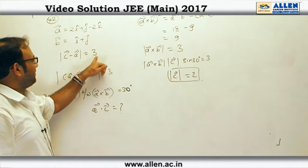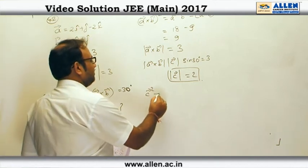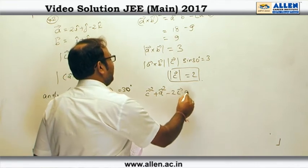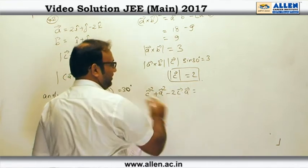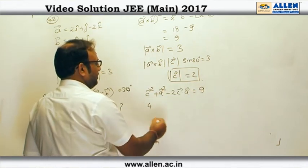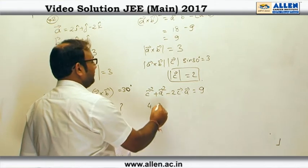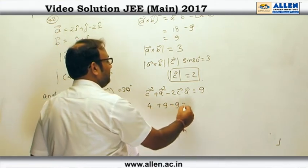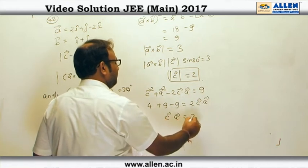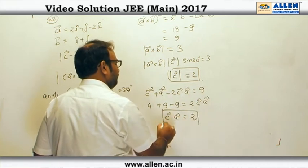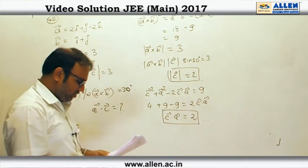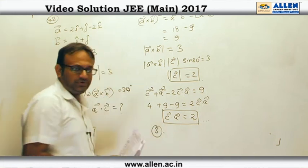Using the relation |C - A| = 3 and squaring it: C² + A² - 2(C·A) = 9. Now C² = 4 and A² = 9, so 4 + 9 - 9 = 2(C·A), which gives C·A = 2. According to the options, option number 3 is the correct answer.